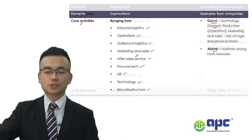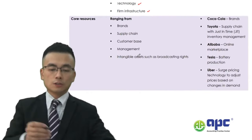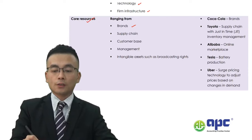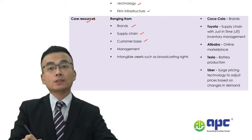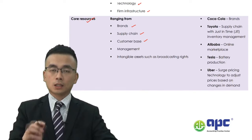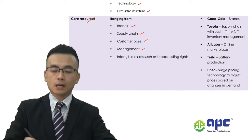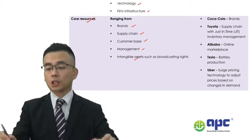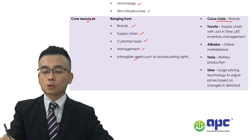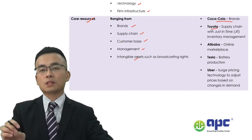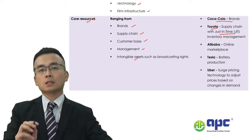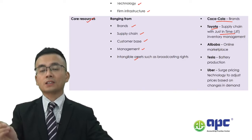Let's move on to the next element of strategy: the core resources. Core resources refer to whether you have a strong brand, a strong supplier and dealer customer base, the core customer base, loyal customers, loyal management teams, and intangible assets granted by the government. For example, Coca-Cola's brand is its core resource. Toyota, based in Japan, uses the just-in-time (JIT) inventory management system due to limited land, producing things based on actual orders placed by the customer.